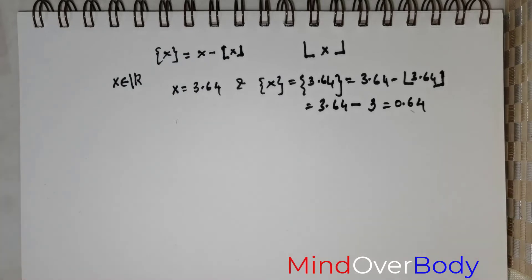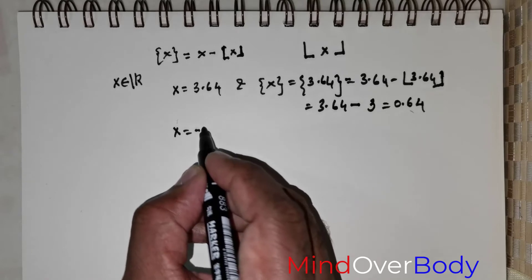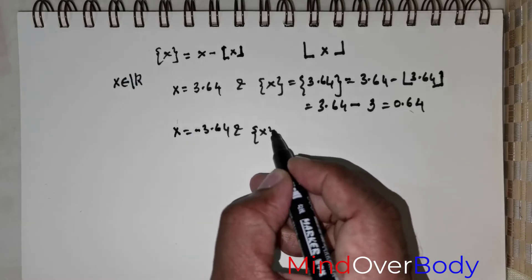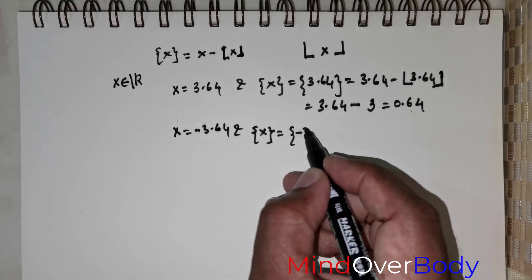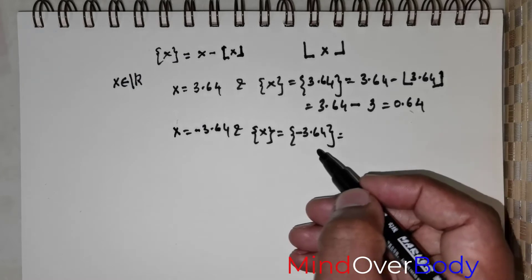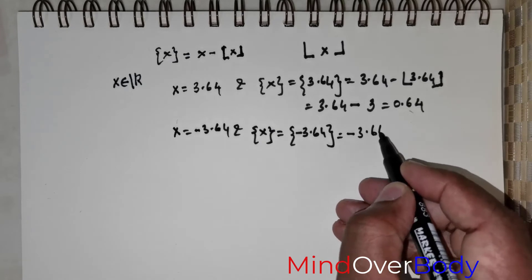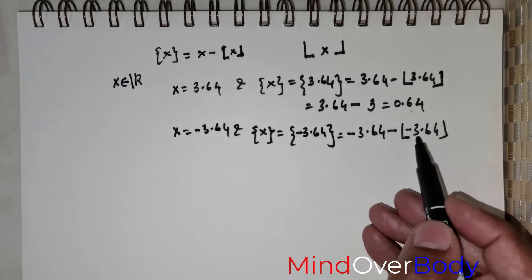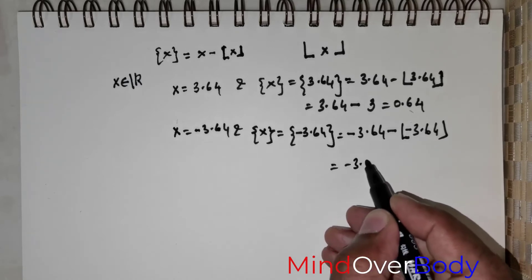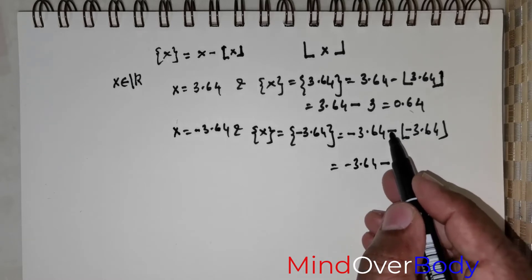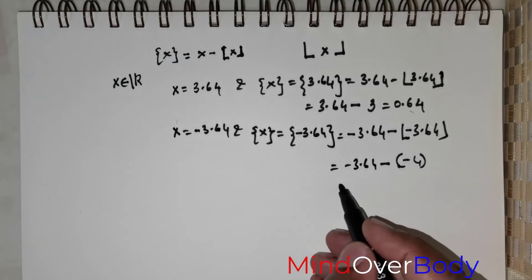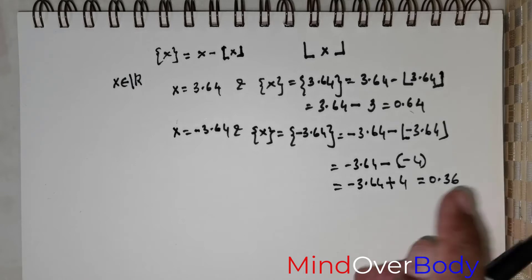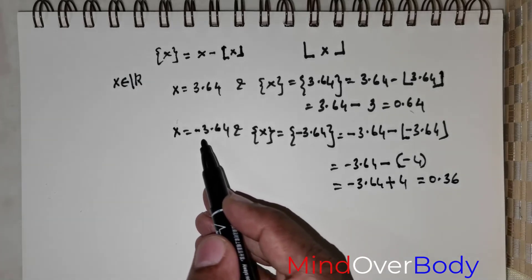Now if x is equal to negative 3.64 and we are expected to find the fractional part of x, it is going to be fractional part of negative 3.64, which equals from the formula: negative 3.64 minus the floor of negative 3.64. Because of the presence of a negative, the floor of negative 3.64 is negative 4. So this becomes negative 3.64 minus negative 4, which equals negative 3.64 plus 4, giving 0.36.